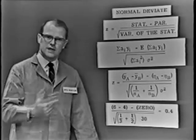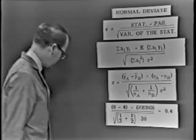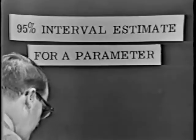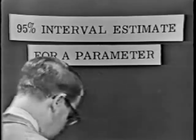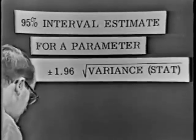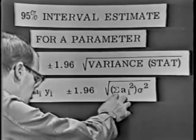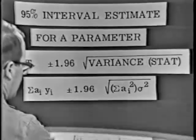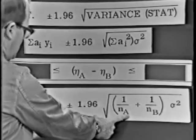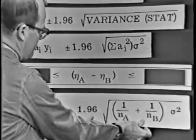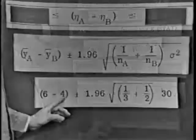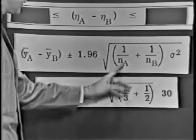Suppose you want to make an interval statement for the true difference between the means of those two cake mixes. The 95% interval estimate for the parameter — the difference between the two means — is given by the statistic plus or minus 1.96 times the square root of the variance of that statistic. For our particular problem, that's y-bar_A minus y-bar_B, plus or minus 1.96 times the square root of (1/n_A + 1/n_B) × σ². Dumping in the data: 6 minus 4, plus or minus 1.96 times the square root of one-third plus one-half times 30.